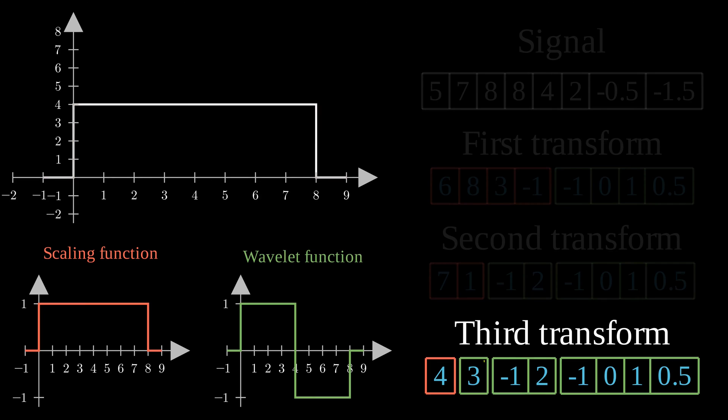Now, we need to use the next value in the table, which is a 3. As it is in a detail space, we need to use the wavelet function. As before, we place it on the graph and scale it by 3. Then we just add this function to the one we had before and we get a new function with 2 steps.